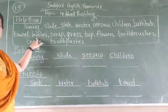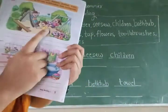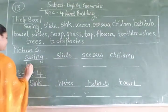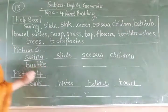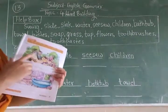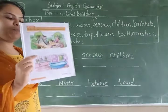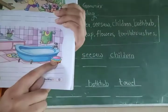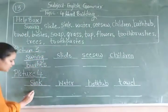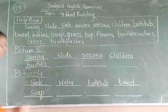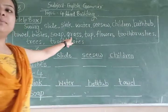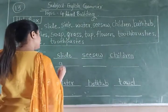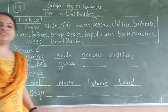After that: B-U-S-H-E-S — bushes. Bushes matlab chote chote trees ke jo aise bane hue rehte hain. This is in picture number 3. B-U-S-H-E-S, bushes. After that: S-O-A-P — soap. Soap means sabun. You can see soap here beside the bathtub. Write down S-O-A-P, soap in picture number 4. After that: G-R-A-S-S — grass. It is in picture number 3, in the garden. Write G-R-A-S-S, grass.